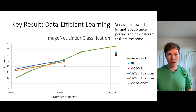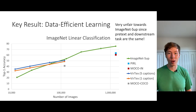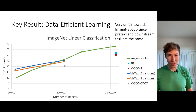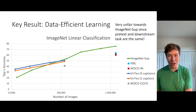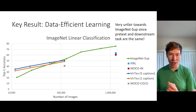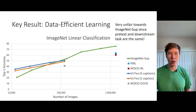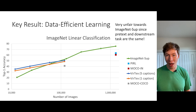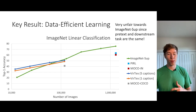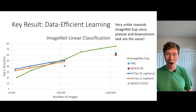We also did a similar experiment for linear classification on ImageNet. This experiment is extremely unfair to our model because the baseline of supervised ImageNet pre-training is the same as the downstream task, whereas our model performs a pretext task of captioning on COCO, which is very different. But even despite this unfairness, under the same number of annotated images, we perform almost as well as directly learning visual features on the downstream task of ImageNet classification. This really showcases the power and data efficiency of learning visual representations from language.